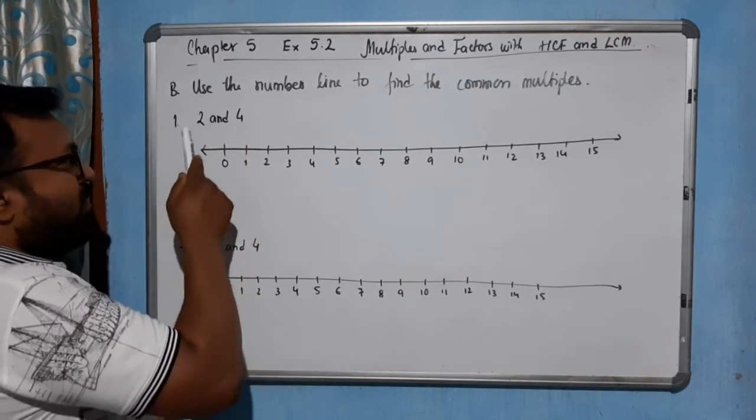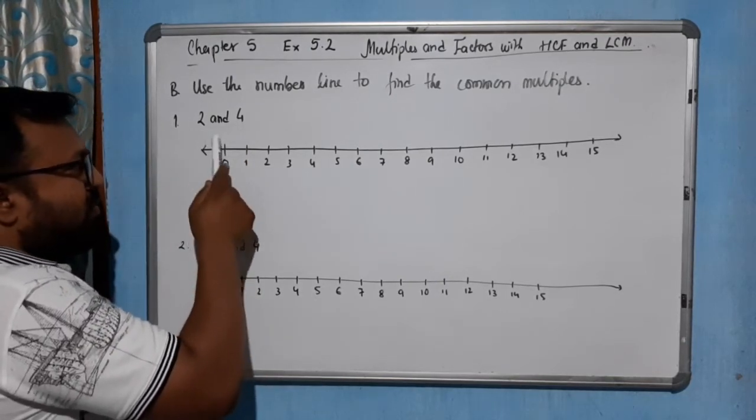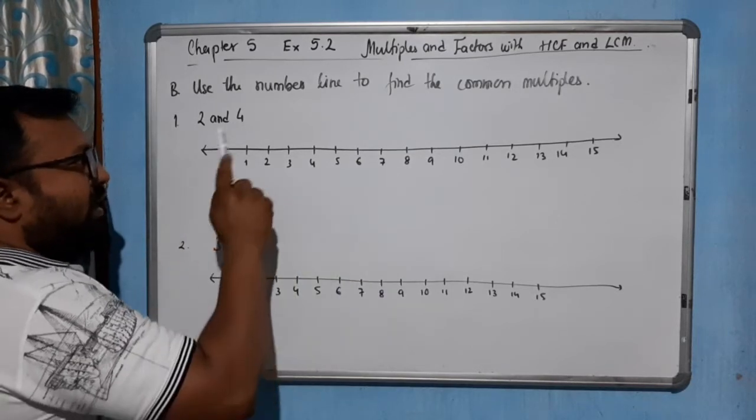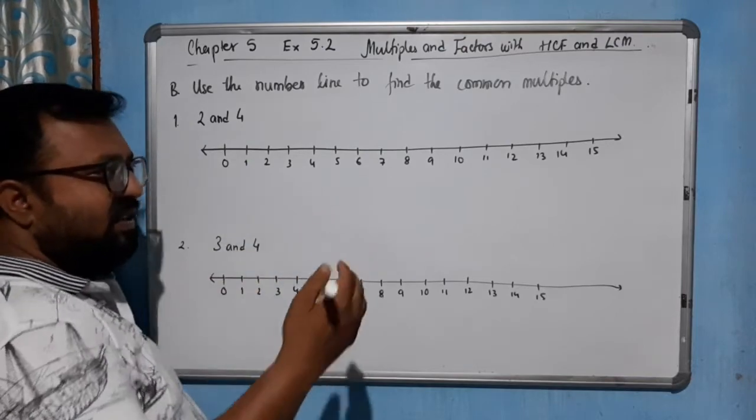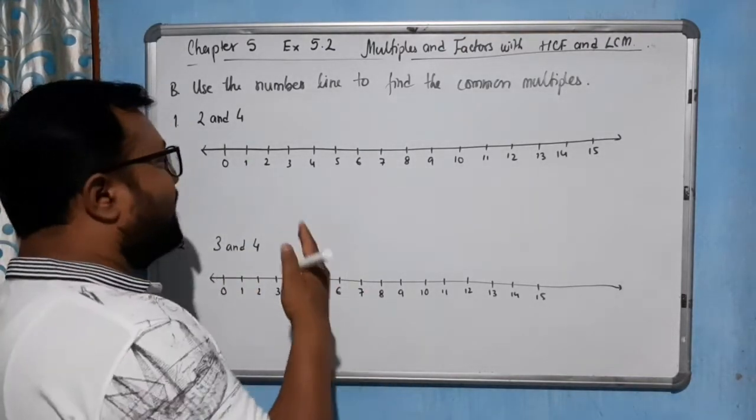First we need to find the multiples of 2 in this number line. Simply multiples of 2 and multiples of 4 in the similar line. And then we will say which are the numbers common for both 2 and 4.